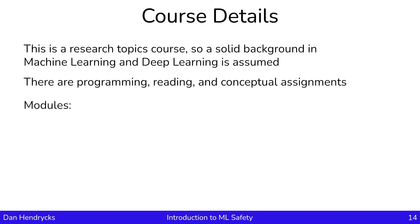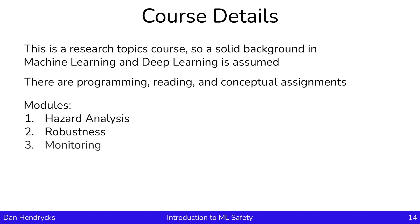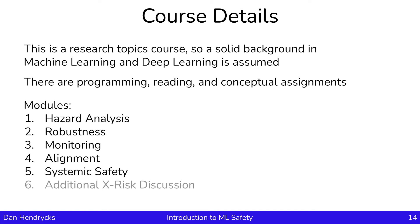We have several modules. First is hazard analysis, where we'll discuss how can we make systems, in general, safer, and how can we understand risk. Then we'll jump into more specific machine learning topics, such as robustness. Then we'll talk about monitoring, alignment, and systemic safety. At the end, we'll close by having some additional conceptual discussion about existential risk. Okay, let's get started with the course.